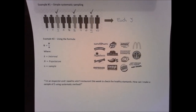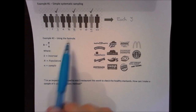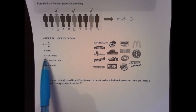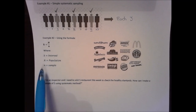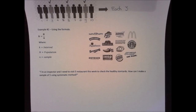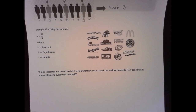But that was just a simple version. There is another approach using the formula: k equals N over n, where k is the interval, N is the population, and n is the sample. Let's see this example: I am an inspector and I need to visit five restaurants this week to check health standards. Can I make a sample of five using the systematic method?